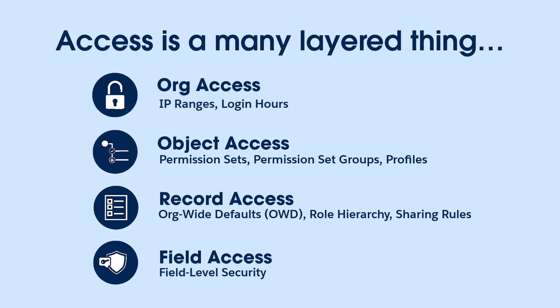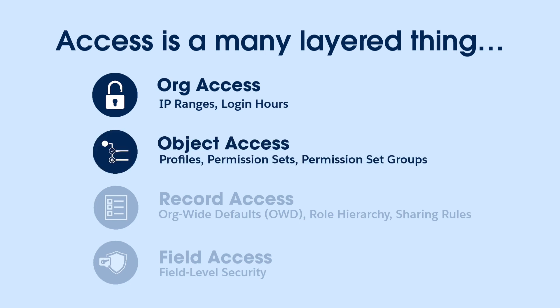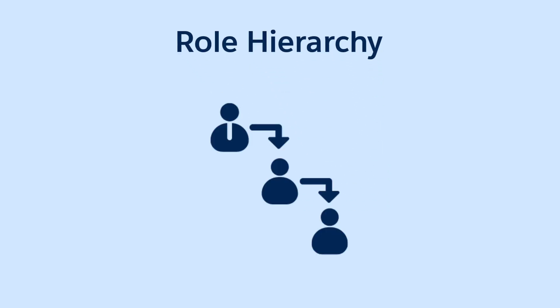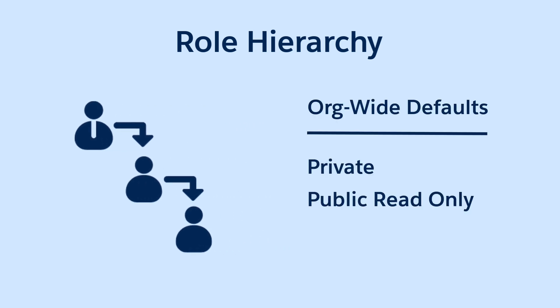We've given our users access to the organization by setting IP ranges and login hours. We've granted them access to objects through permission sets, and we've set our organization-wide default sharing settings. Now it's time to talk about roles and the role hierarchy. Role hierarchy is a way to extend access to records when org-wide sharing settings have been set to private or public read-only. Users get access to records owned by others in roles below them in the role hierarchy.